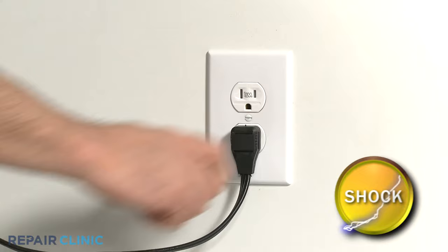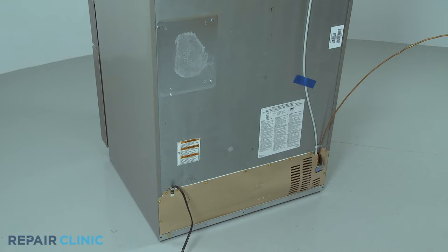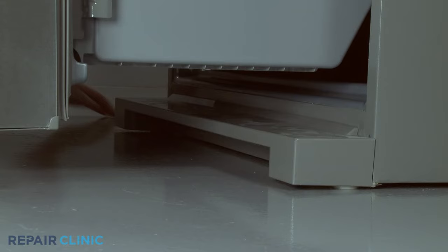Before you replace the fan motor, be sure to unplug the refrigerator's power cord. Condenser fan motors are normally found near the bottom of the appliance, behind a rear access panel. To move the refrigerator away from the wall, you may need to remove the base grill and raise the front leveling legs.